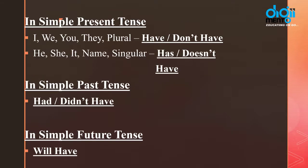First of all we talk about simple present tense. In this case, I, we, you, they and plural — the form of verb we use is 'have'. When we go into negative or interrogative, then we use 'do not' or 'don't'. When we talk about third person singulars — which we have taught in tenses — he, she, it, or someone's name or something else, we use 'has'.